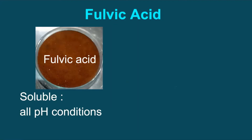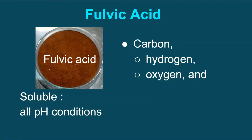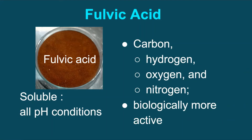Fulvic acid is a yellow to yellowish-brown humic substance, soluble in water under all pH conditions. It consists mostly of carbon, hydrogen, oxygen, and nitrogen. Fulvic acids contain nearly double the oxygen of humic acid, and hence they are biologically more active.